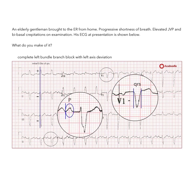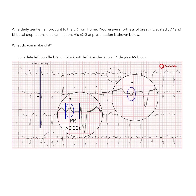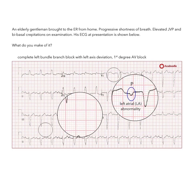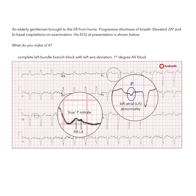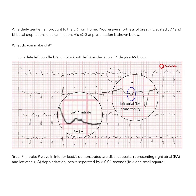First degree heart block is evident, which may indicate damage to the AV node. The deep negative P waves in Lead V1 are indicative of the presence of left atrial hypertrophy or abnormality, and consistent with this, there is true P mitrale evident in the inferior leads.